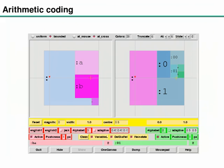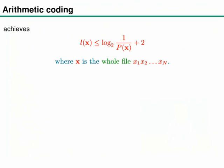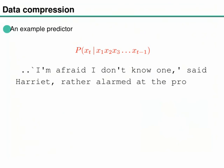Any source file corresponds to an interval on the real line between 0 and 1. Arithmetic coding gives compression down to within two bits of the information content of the entire file. This overhead is potentially a factor of n smaller than using symbol codes, so arithmetic coding is almost always far better. In practice, arithmetic coding uses an oracle - a piece of software that predicts the next character given all characters x_1 through x_{t-1} that have been seen.